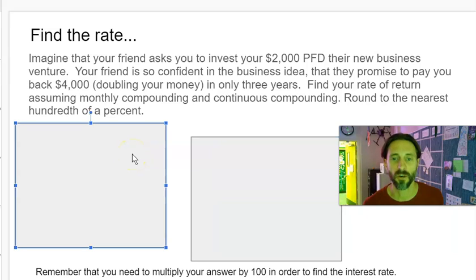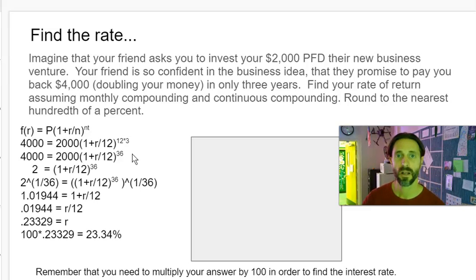First, let's start with monthly compounding. You'll recognize this from the exponential growth formula where your future value is the initial value times the quantity (1 plus the rate divided by the compounding periods) raised to the NT, the number of periods times the time.